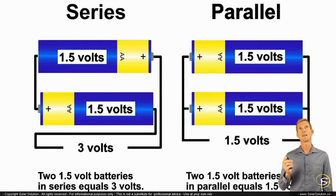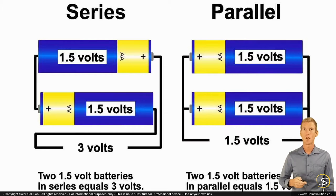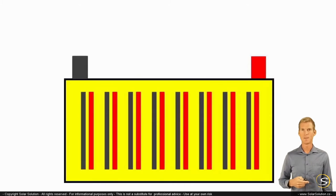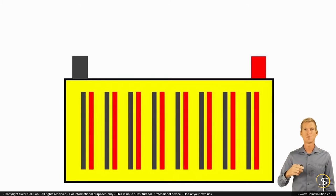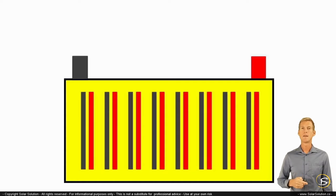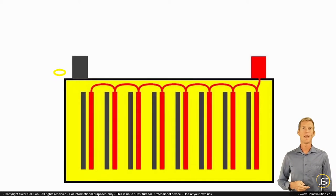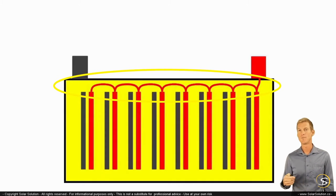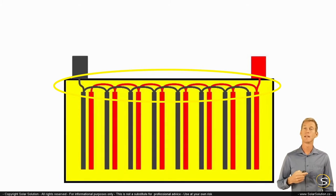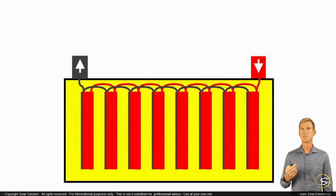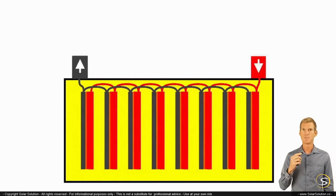Let's go back to our electrochemical cell, where we're trying to create a higher capacity while keeping the voltage the same. With a bigger vessel, we have more plates to increase capacity. We connect all the positive plates together and connect them to the positive terminal, and all the negative plates we wire together and connect to the negative terminal. We have now created an electrochemical cell which has a much higher capacity than the initial cell, but the voltage is still the same.